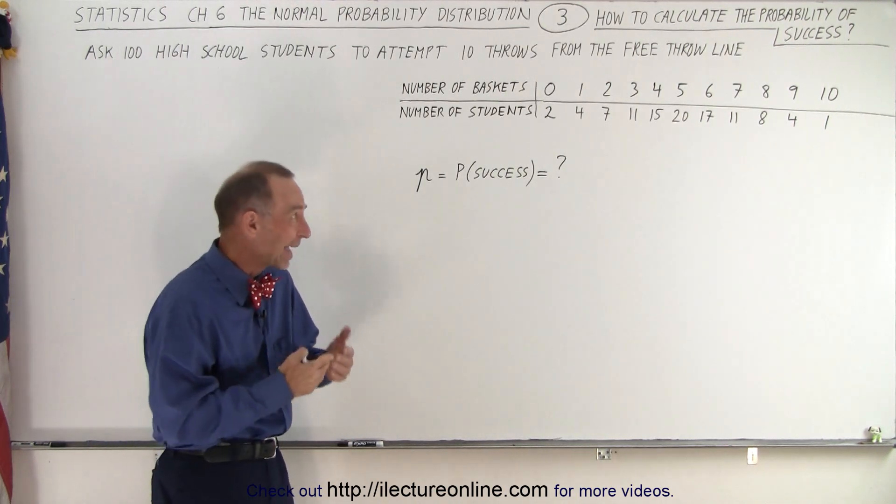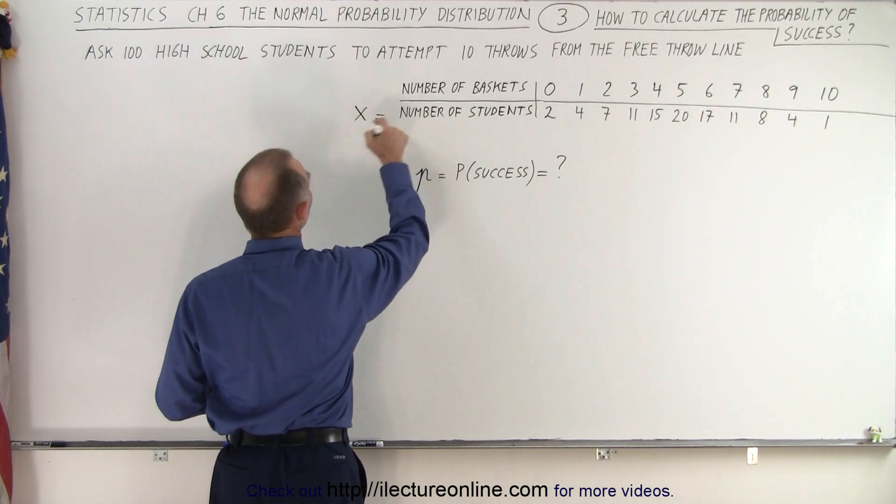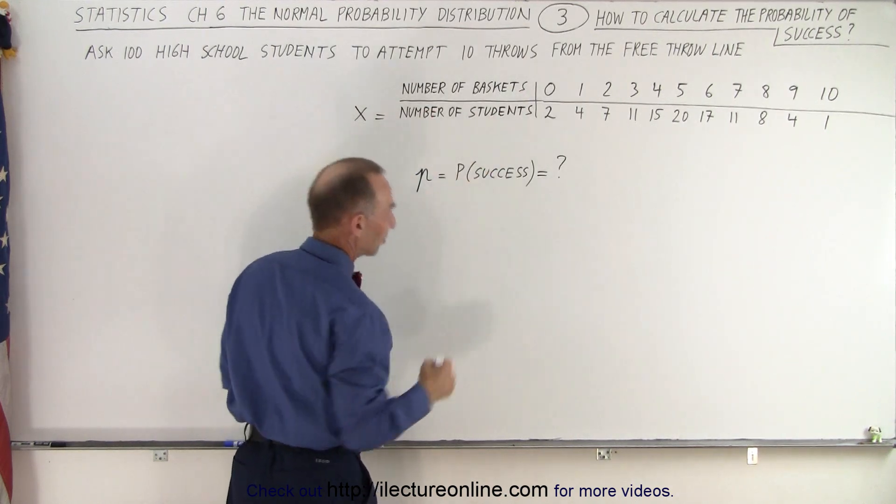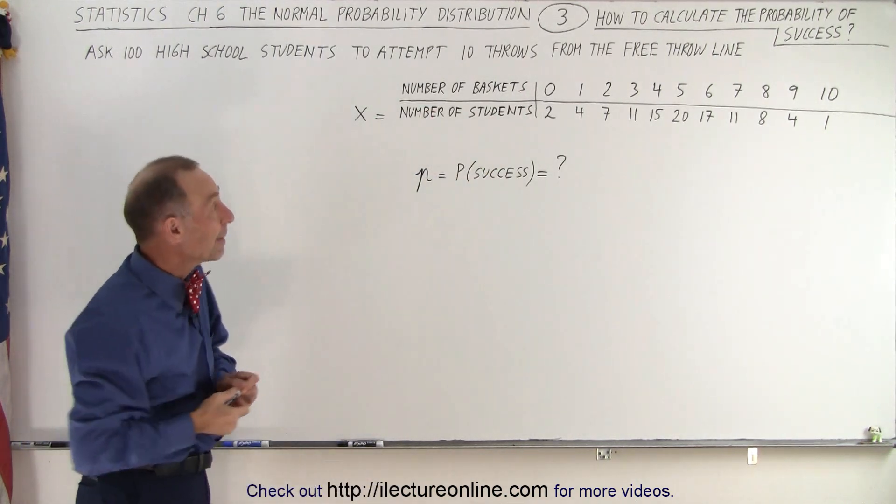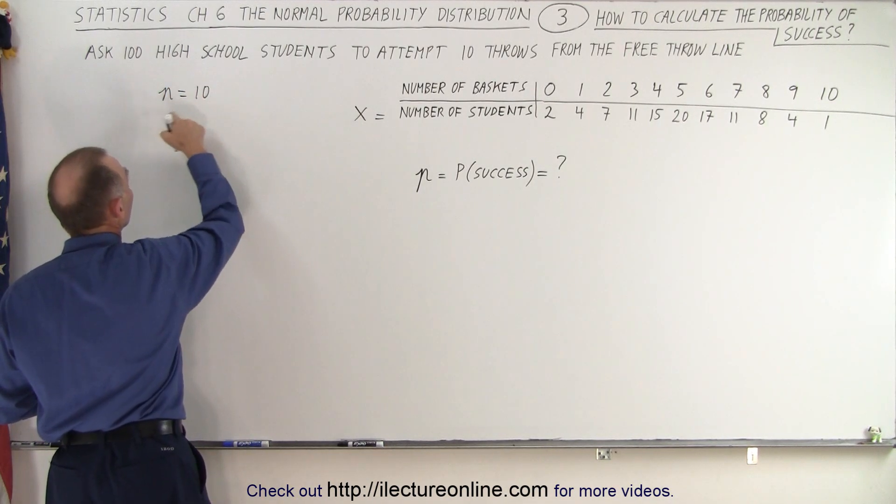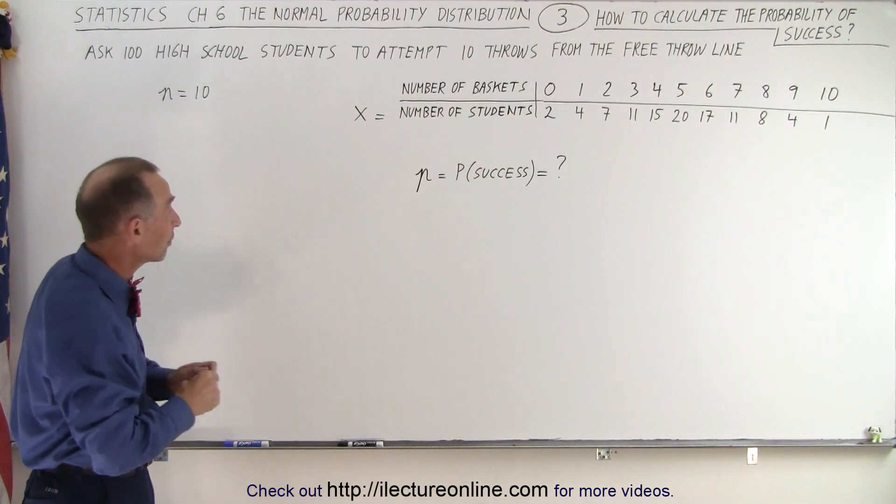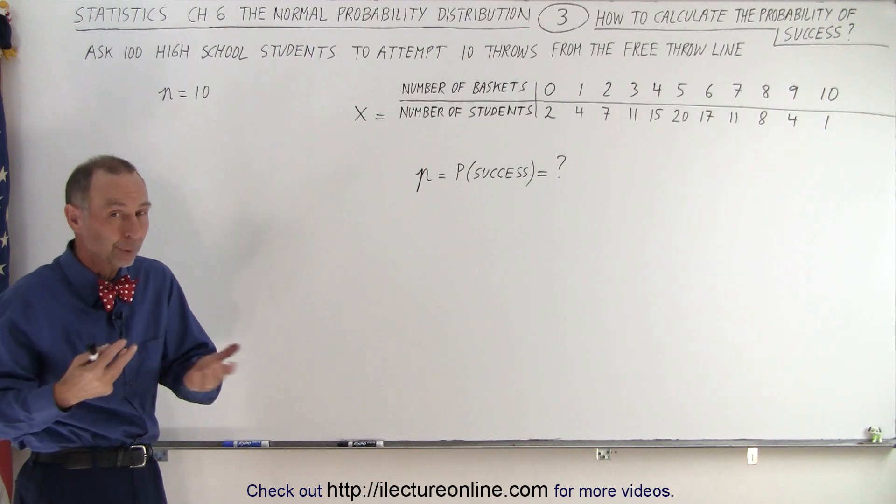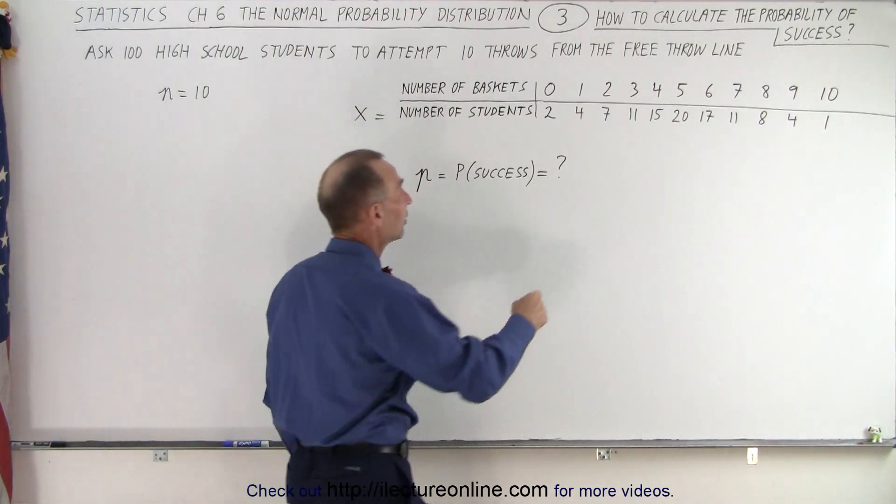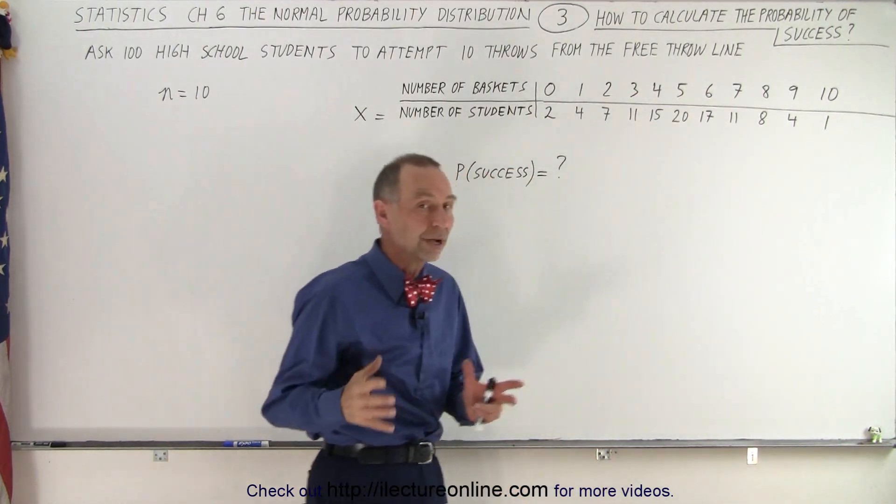In a case like this where we have x being the random variable, so here we go. X being the random variable represents the number of students, and then we have the number of baskets successfully made out of 10 attempts. So in this case, we know that n equals 10 because we have 10 tries. Again, we're asking 100 high school students to attempt 10 throws from the free throw line with a basketball. See how many baskets they can make, and here out of 100, these are the number of students that made these number of baskets out of 10 tries.